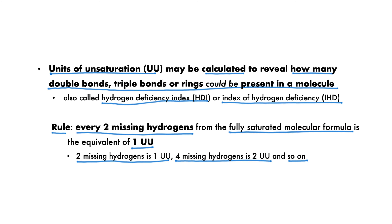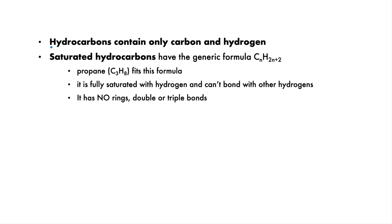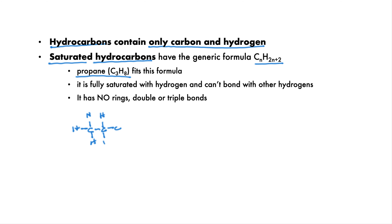We'll start with hydrocarbons that have only carbons and hydrogens. Saturated hydrocarbons have the generic formula CnH2n+2. Propane, with the formula C3H8, fits this pattern. We'll show both the Lewis structure and the bond line structure, but from now on we'll use only bond line structures. Like all saturated hydrocarbons, propane is saturated with the maximum amount of hydrogens possible and is not able to react with any more. It has only single bonds, which means no rings, double or triple bonds.